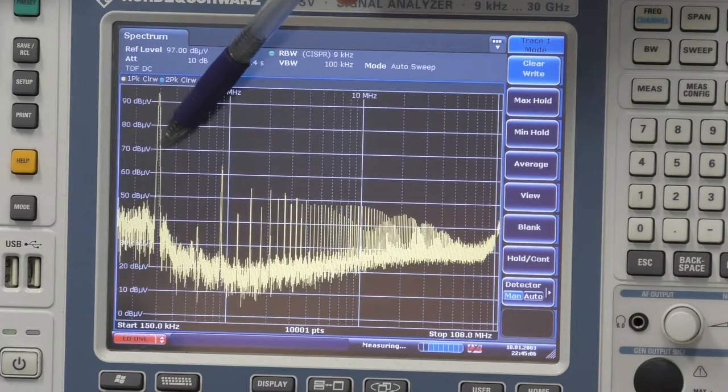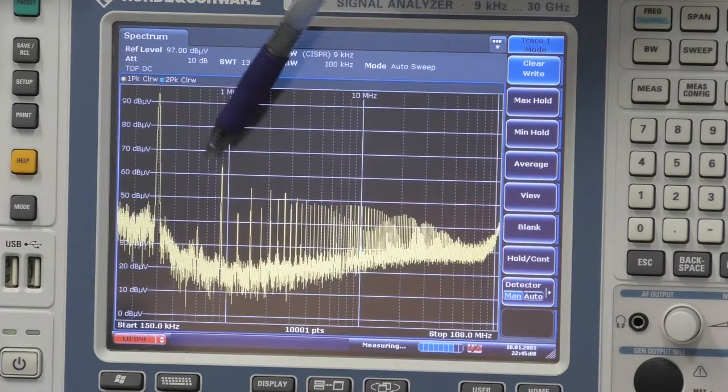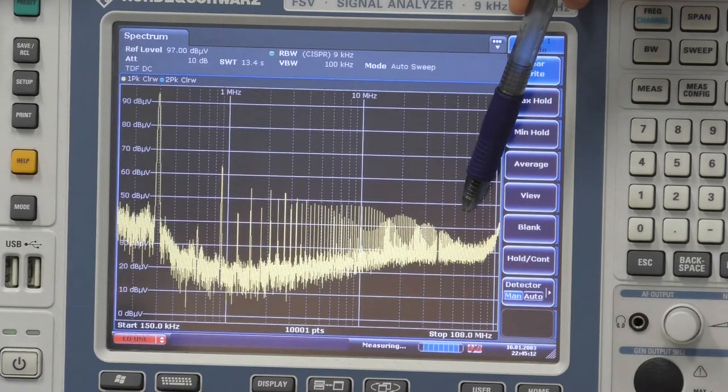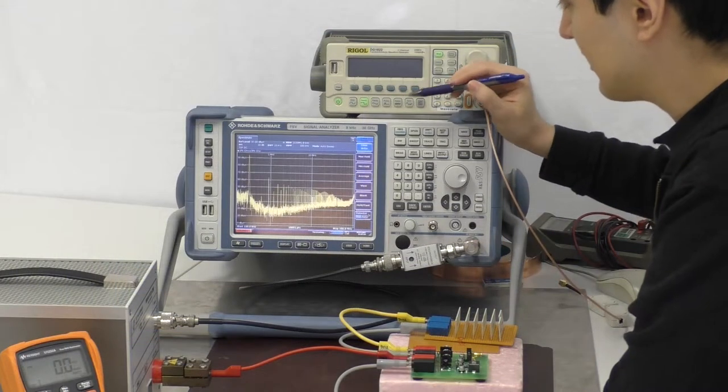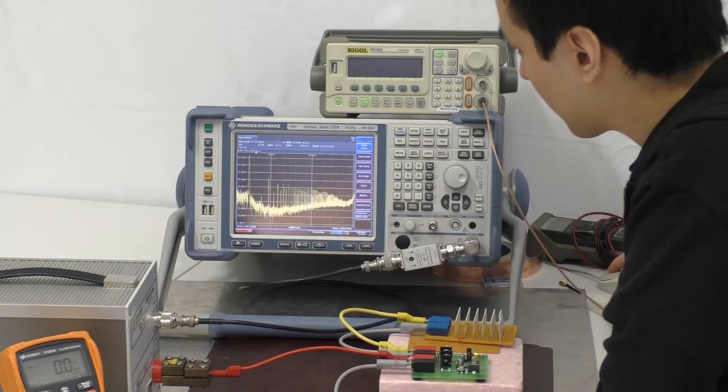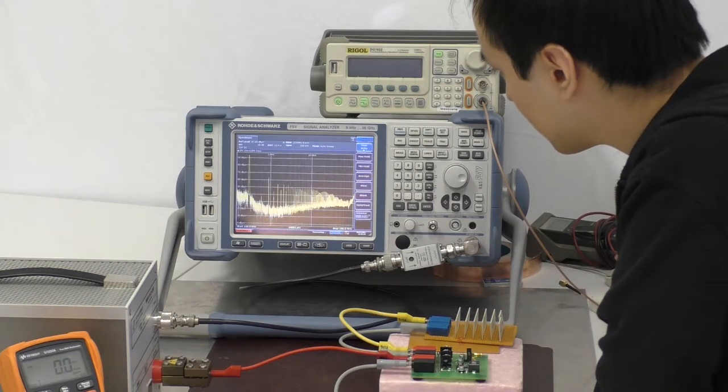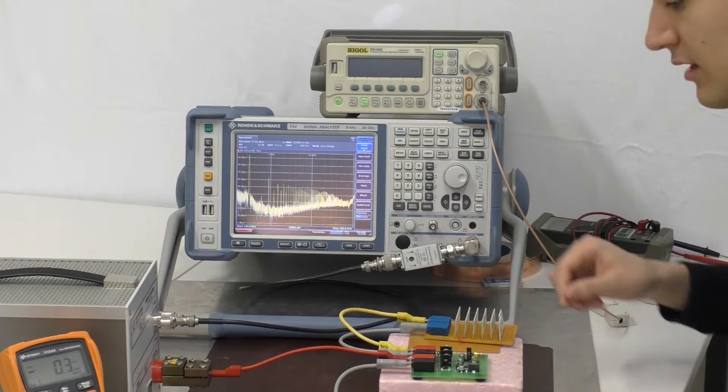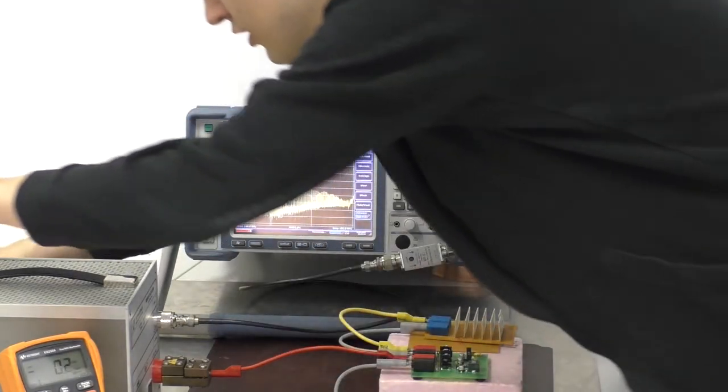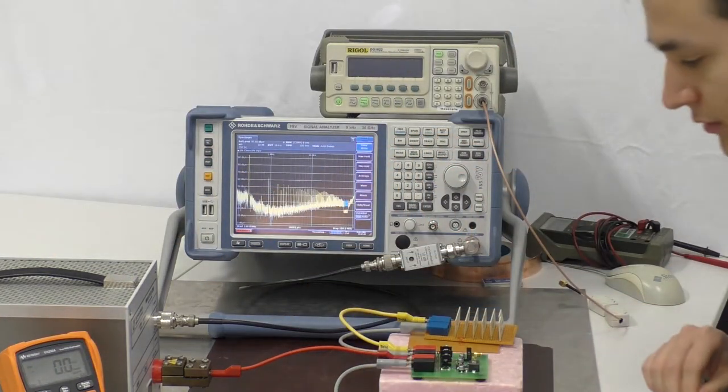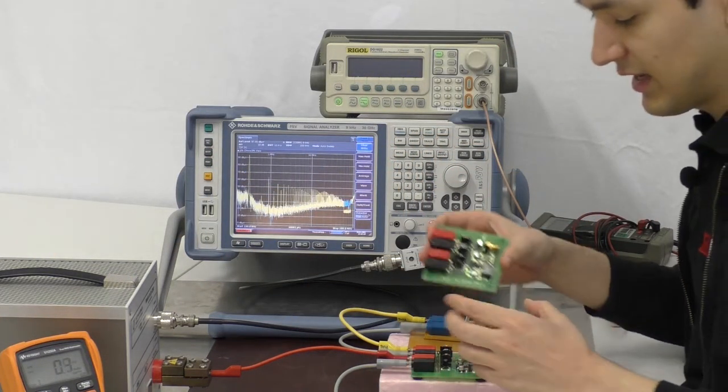And we can see here the disturbances which comes out from our line impedance stabilization network. And let's save the result here with the blue plot. So now we have saved it on the blue plot here. And now let's exchange the circuitry with our second PCB here.